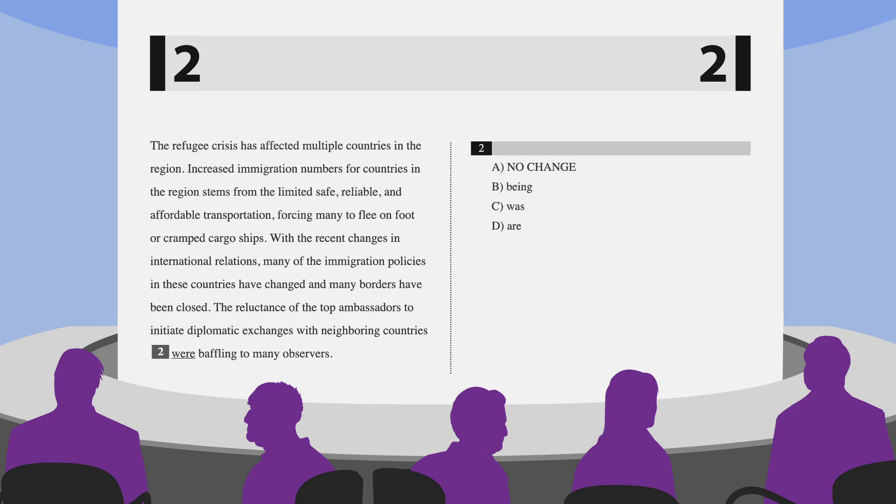Let's look at how this sentence would read without these prepositional phrases. It would read, The reluctance were baffling. We can now clearly see that the singular subject reluctance needs a singular verb instead of were. So, was is our answer. Choice C.